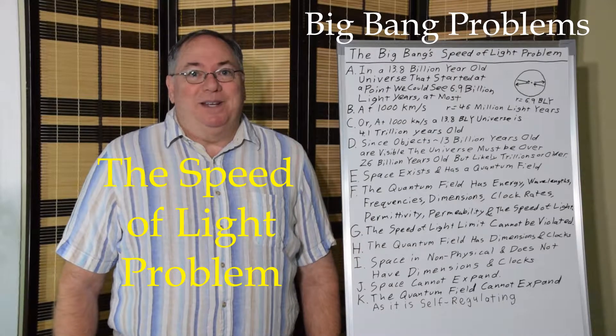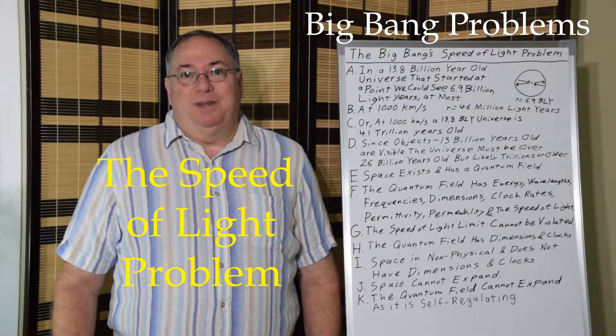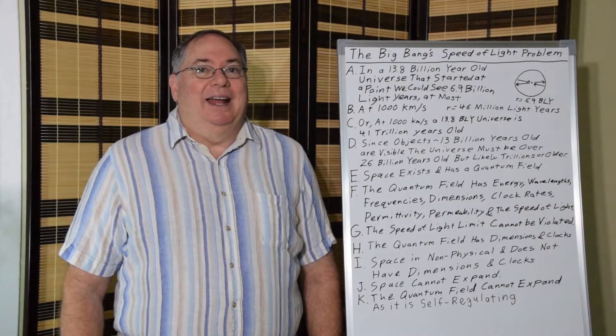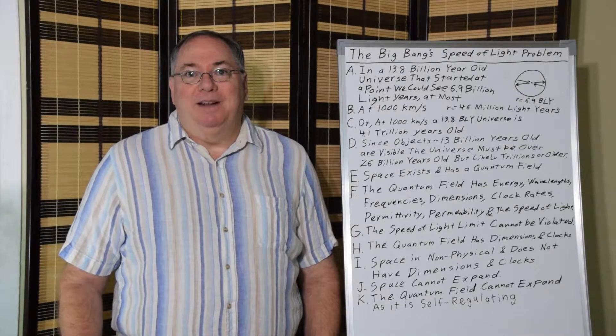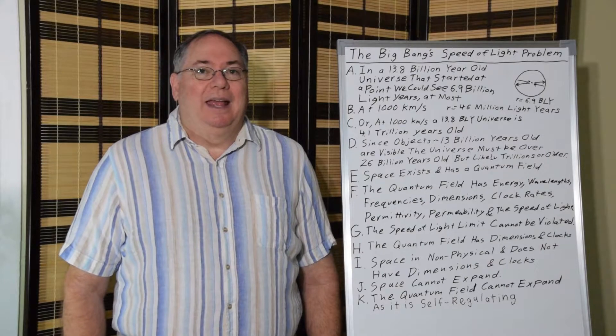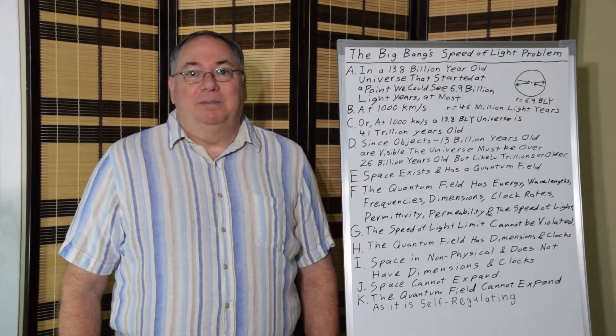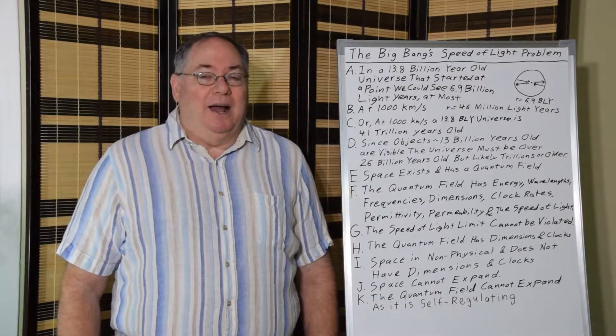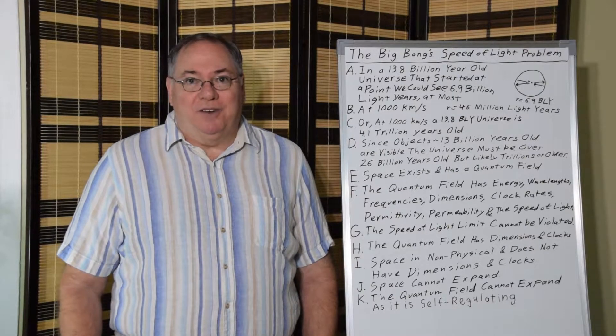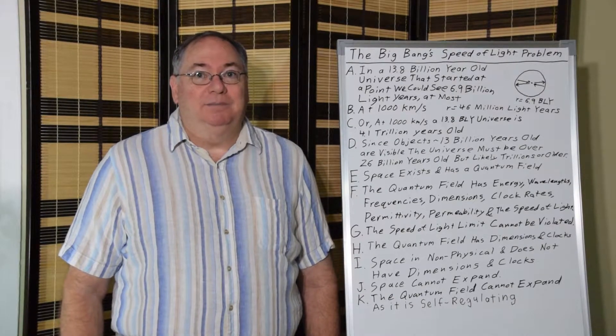Today I'm doing another video in my series on problems with the Big Bang. And this one's on the Big Bang's speed of light problem. And that problem comes about because the speed of light limit exists and objects and light cannot travel faster than the speed of light. Period.